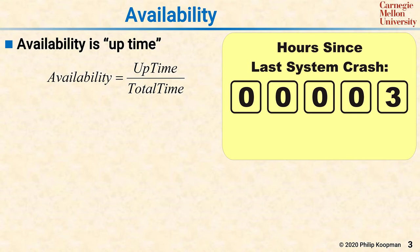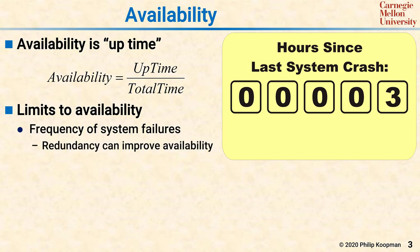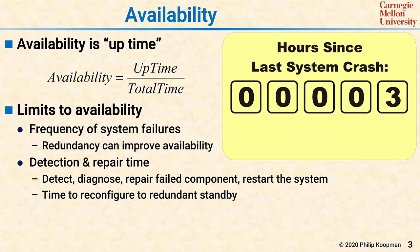While you'd hope that any computer system has availability of 90% or at least 99%, getting much past that starts becoming surprisingly difficult. The following factors affect the practical limit on availability. The frequency of system failures has an obvious effect, because availability doesn't even become a problem if the system never fails. Redundancy can improve availability — if one component fails, another redundant component can take over. Just as important is detection and repair time, because how long the system is down after failure also affects availability. This includes detecting the failure, diagnosing it, repairing the component, and then restoring the system to operation.